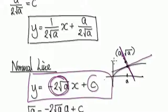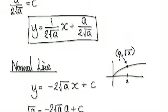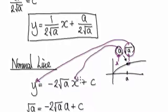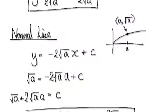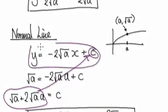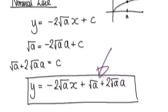We still need to find the intercept of the normal line. We know the gradient and we know it passes through the point (a, √a). This is your x and this is your y. Substituting into y = mx + c gives us an expression, and adding the appropriate term to both sides gives us c. So c is determined, and putting it back in gives us the equation of our normal line.